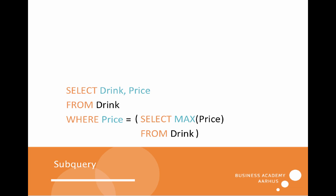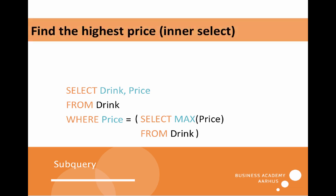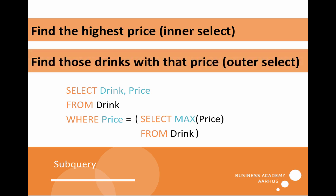To sum up what to do when making subqueries: we have a nested query where we find the highest price through the inner SELECT — that is, SELECT MAX(price) FROM drink — and then we find those rows with that price in the outer SELECT. So we use an inner select and an outer select.